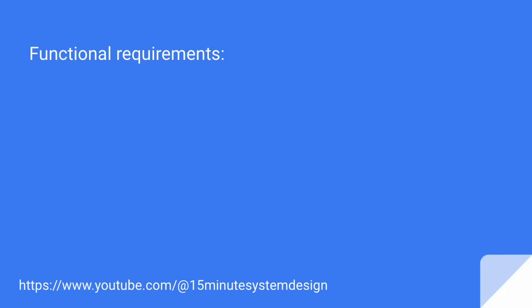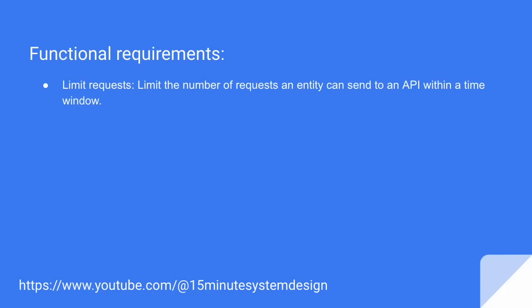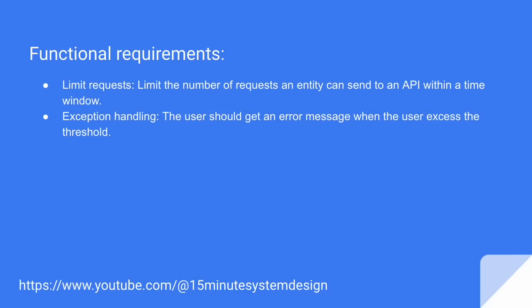Let's talk about functional requirements quickly. This system should be able to limit the number of requests a user can send to an API endpoint within a time window. The system should be able to throw a 429 HTTP status error message whenever the user exceeds the limit. The system should also be able to monitor requests among multiple servers.